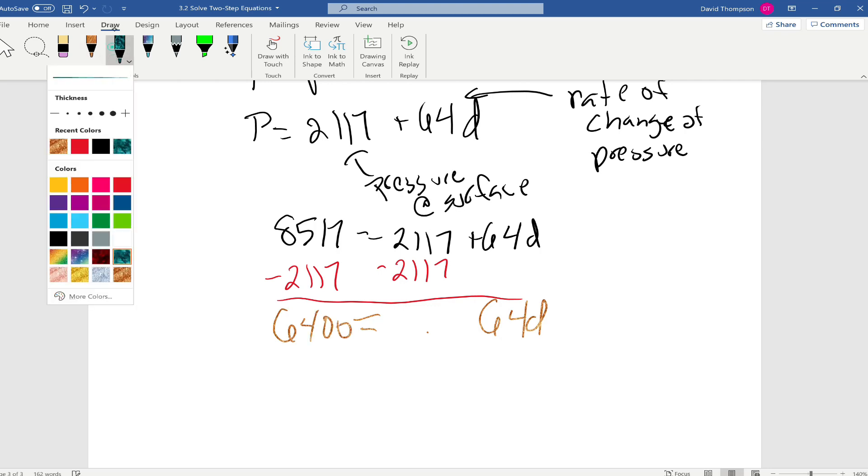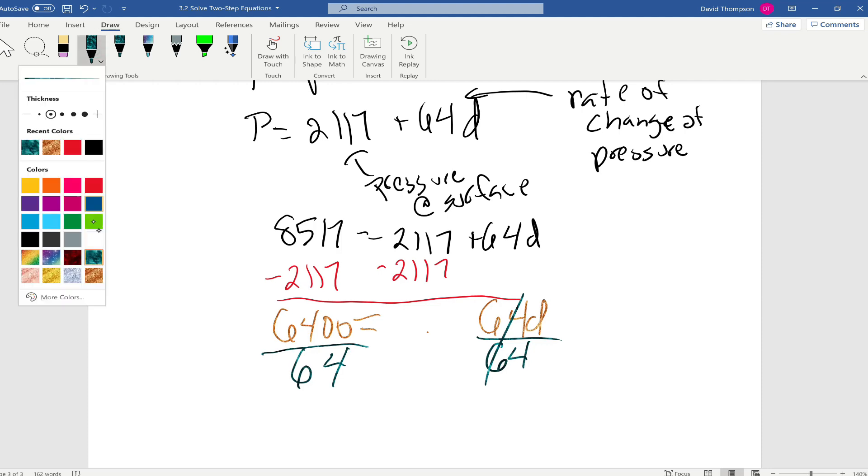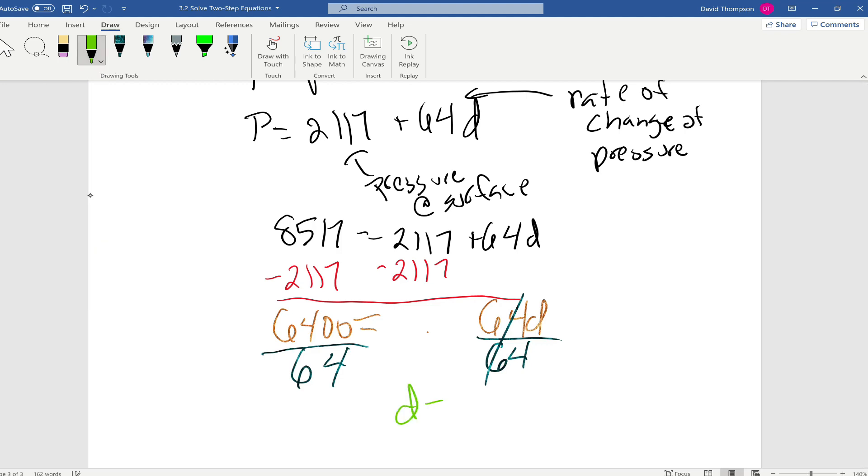Next we're just going to divide both sides by 64. We're just going to be left with d equals 100 or 100 feet.